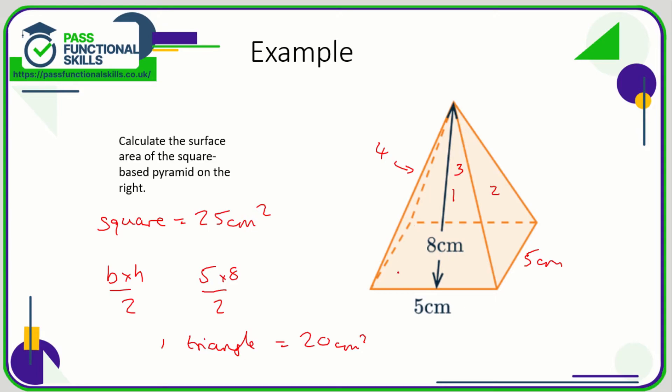So if we've got four triangles, we need to multiply 20 by 4, which is 80 square centimeters. If we add together the four triangles and the square, we've got the total surface area, which is 105 square centimeters.